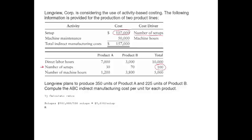The second activity is machine maintenance. The total estimated cost is $50,000. We divide that by the total estimated allocation base, which is machine hours — and the total number of machine hours is 5,000. So if we do this simple math, we find that the maintenance rate is $10 per machine hour.